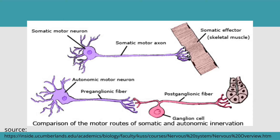In the autonomic motor neuron there are two neurons: a preganglionic neuron and a postganglionic neuron, with a ganglionic cell between them, creating two kinds of connections — one between neuron and neuron, and another between the neuron and the effector organ. In the somatic motor neuron, there is only one connection between the neuron and the skeletal muscle. Signal transduction between these connections occurs through neurotransmission carried out by neurotransmitters — acetylcholine in the somatic motor neuron, and acetylcholine or norepinephrine in the autonomic motor neuron.